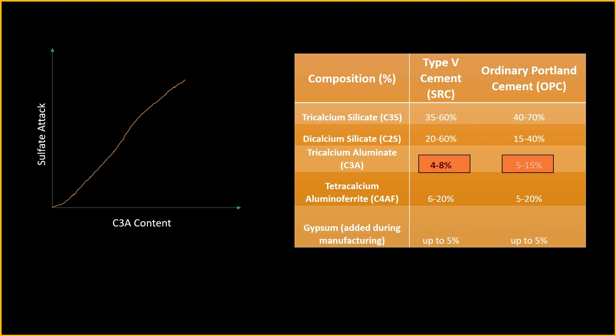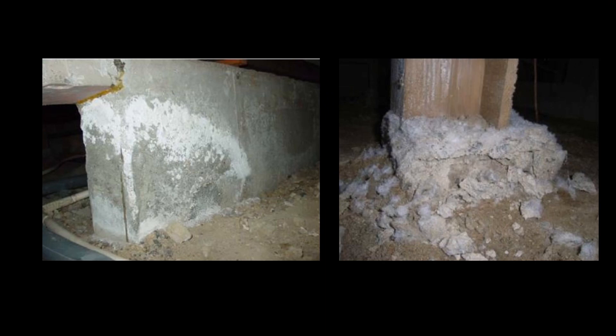To understand better how a lower C3A value in SRC contributes to greater sulfate resistance, we look at how sulfate attack on concrete happens. Sulfate attack occurs when sulfates from external sources — like groundwater or soil — react with the components of the cement paste in the concrete. This reaction can lead to deterioration of the concrete structure over time. Other than the hydration products that contribute to strength, certain expansive compounds are formed when cement elements react with exterior sulfate ions.